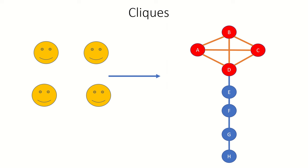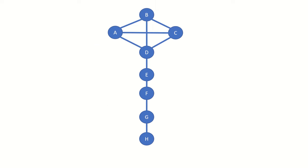Vertices A, B, C, and E do not form a clique, because E is not connected to A, B, or C. The set A, B, C, D is not only a clique — it is a four-clique, meaning that it is a clique of four vertices.